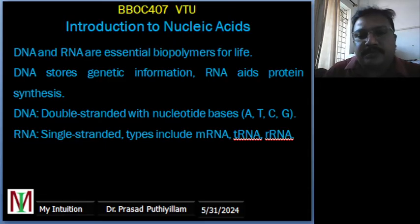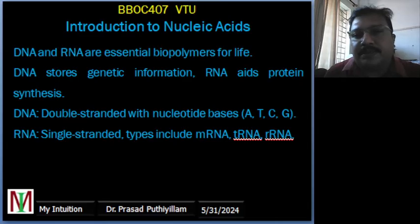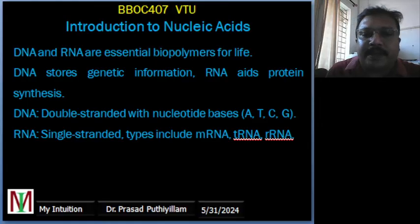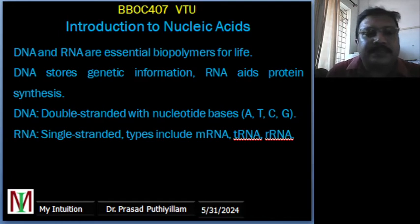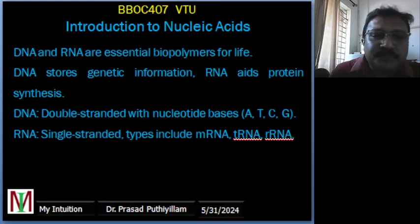DNA essentially stores genetic information as a double-stranded molecule. The single-stranded types are RNA: mRNA, tRNA, and rRNA. mRNA carries the genetic information from DNA to the ribosome — that is messenger RNA — where proteins are synthesized. Transfer RNA helps in decoding the messenger RNA into a protein by bringing the appropriate amino acids during protein synthesis. Ribosomal RNA, together with proteins, makes the ribosome — the site of protein synthesis. For example, the mRNA of the COVID-19 spike protein is used in vaccines to elicit an immune response.